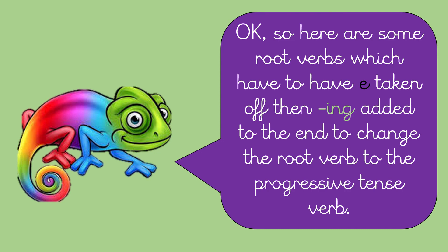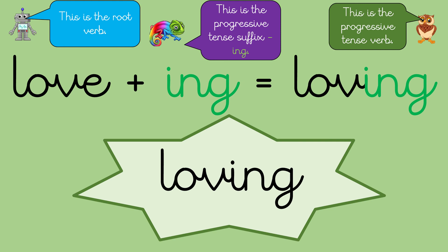Okay, so here are some root verbs which have the E taken off, then I-N-G added to the end, to change the root verb to the progressive tense verb. This is the root verb. This is the progressive tense suffix, I-N-G. This is the progressive tense verb.